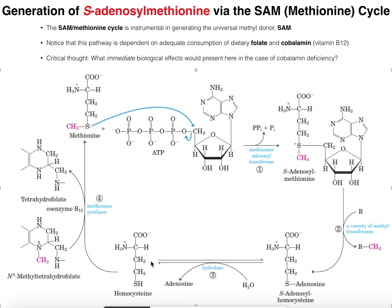The difference between homocysteine and methionine is that homocysteine doesn't have a methyl group on its sulfur. We're going to have to get the methyl group back somehow, and it turns out that it's going to be through a fairly complicated process. The enzyme that catalyzes this is methionine synthase, and there are a couple of cofactors that will be required for this reaction.